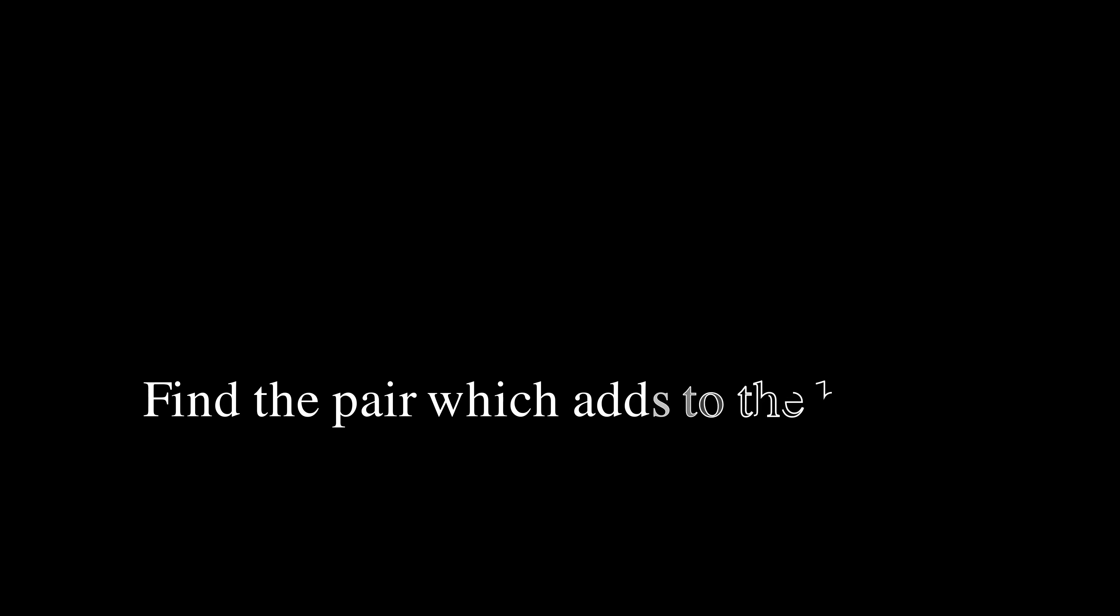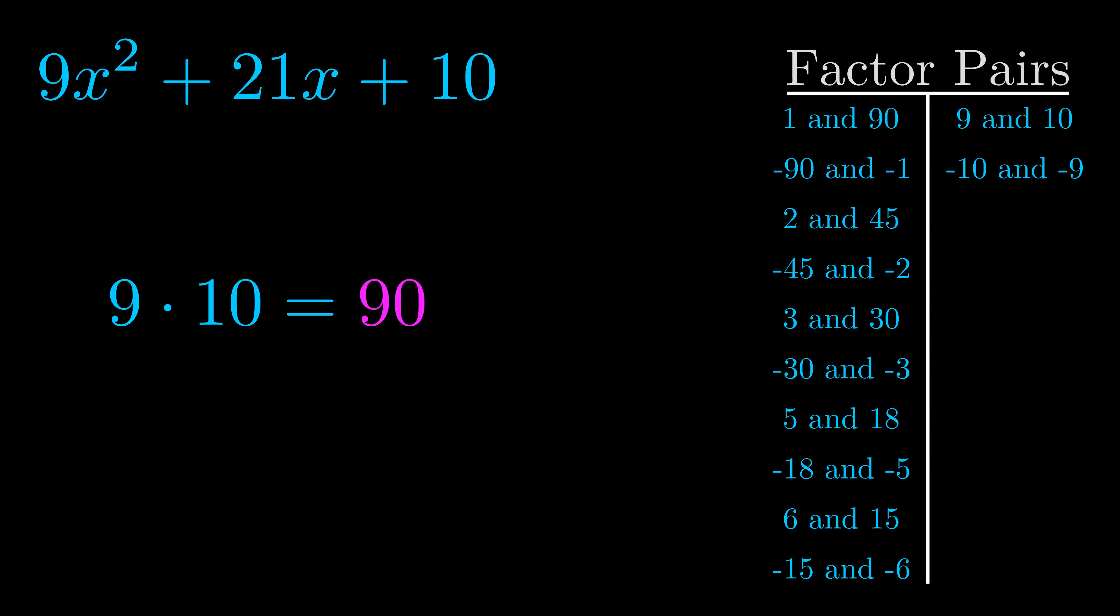The b value is the coefficient on the x term. That's the middle term, the one that we haven't done anything with yet. And really this is the only factor pair that we need.